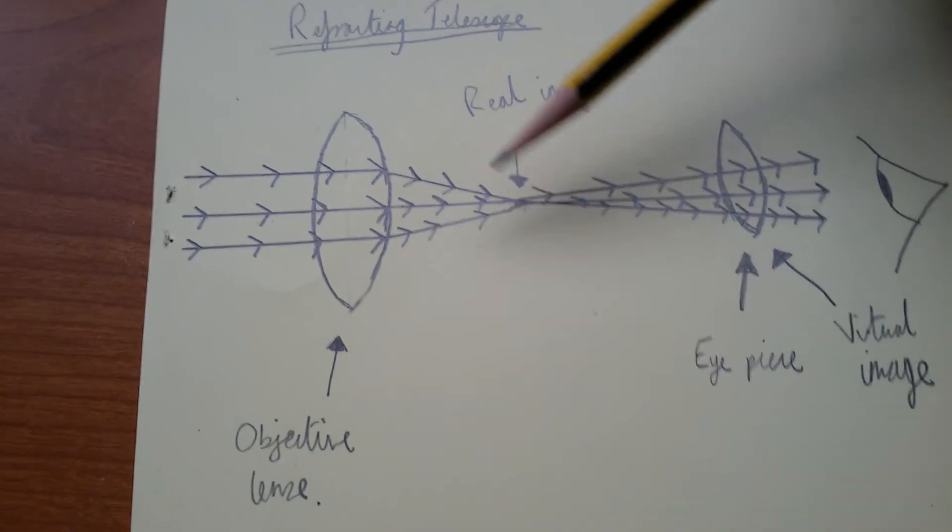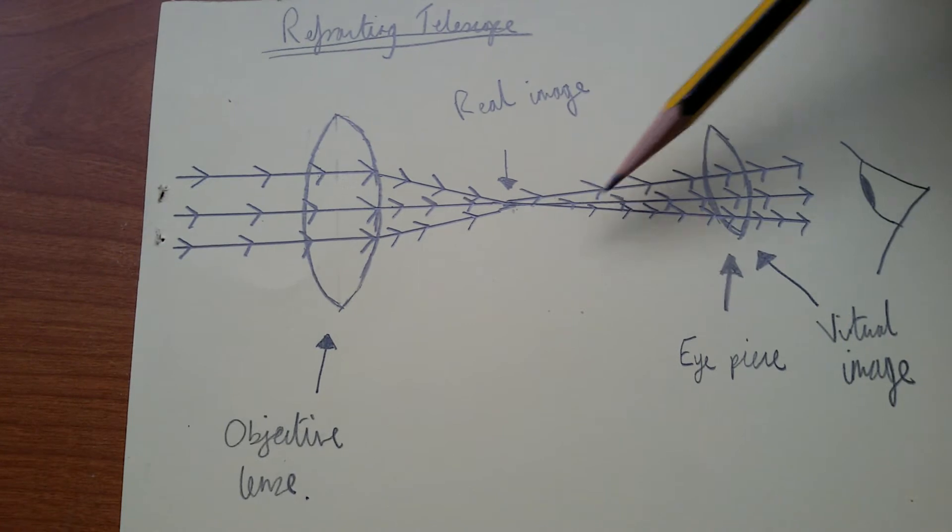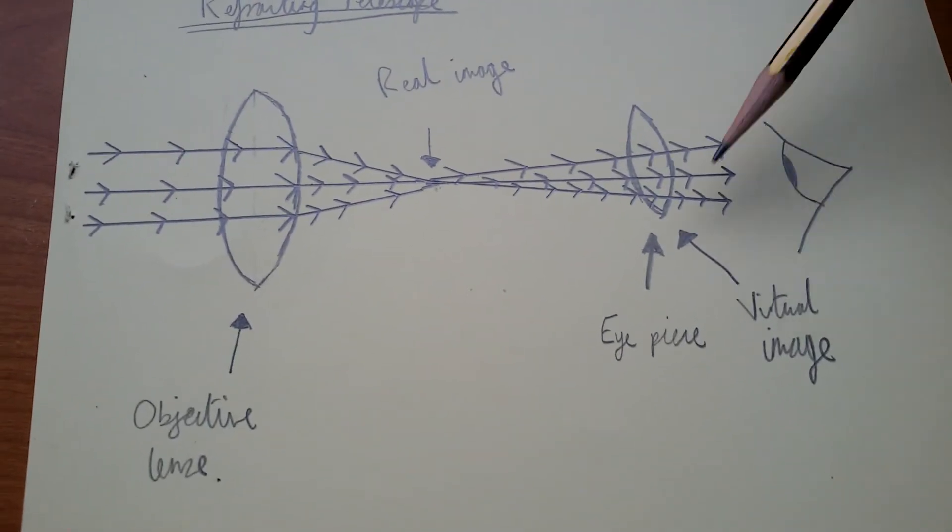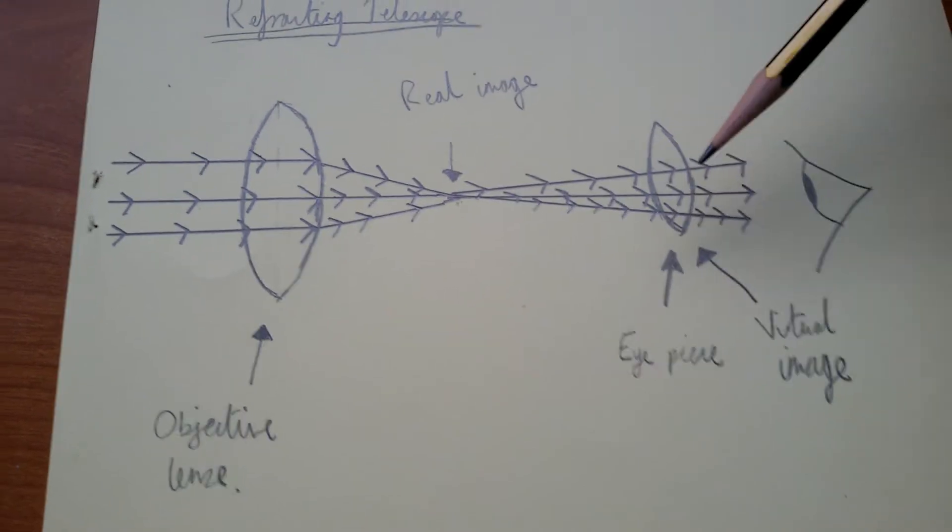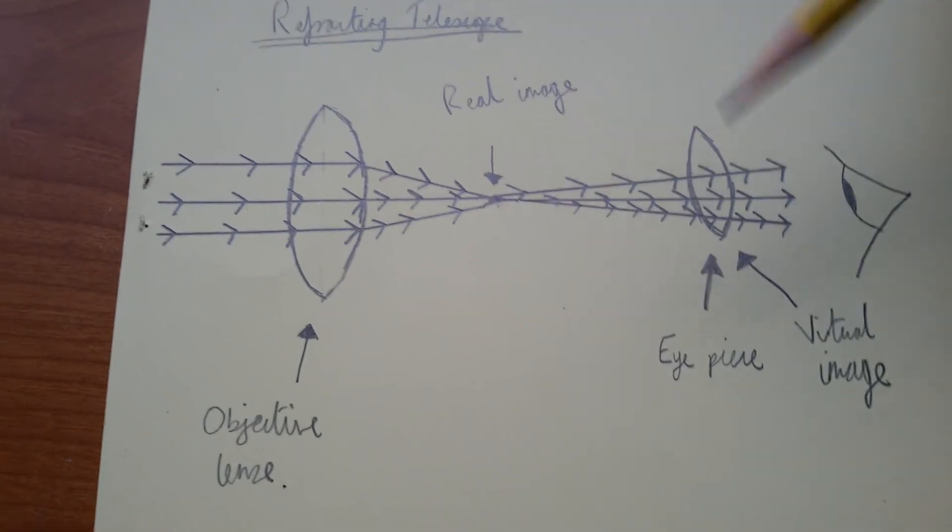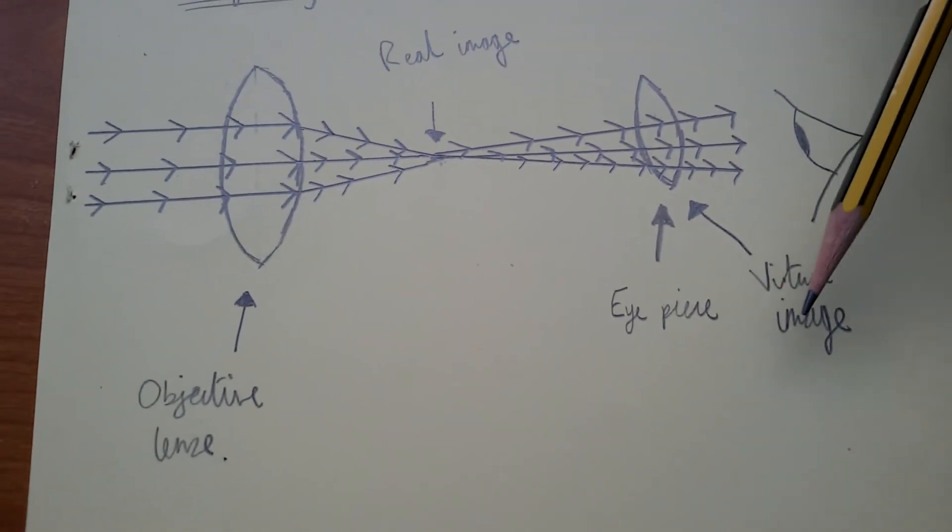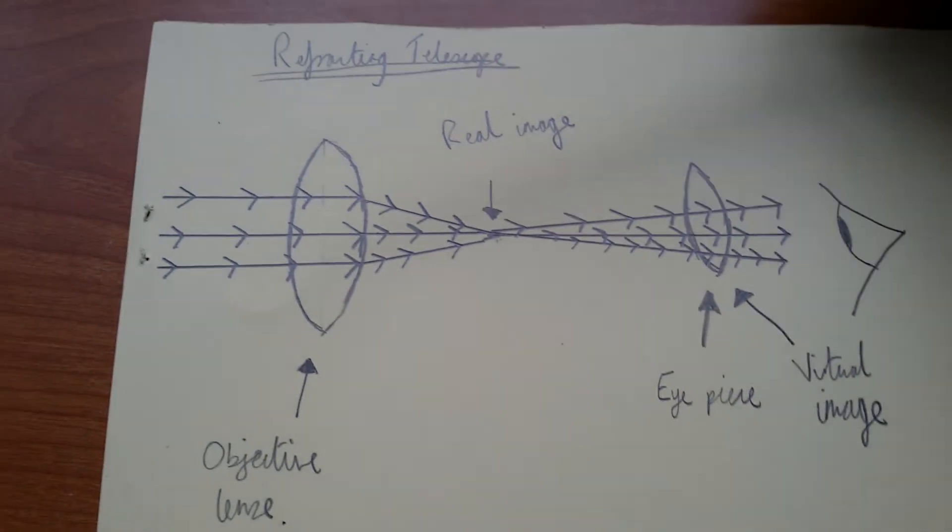The eyepiece then magnifies this real image into a virtual image, as we can see. This lens basically just widens out the light and makes it magnified for the retina to see. But a virtual image is being made.